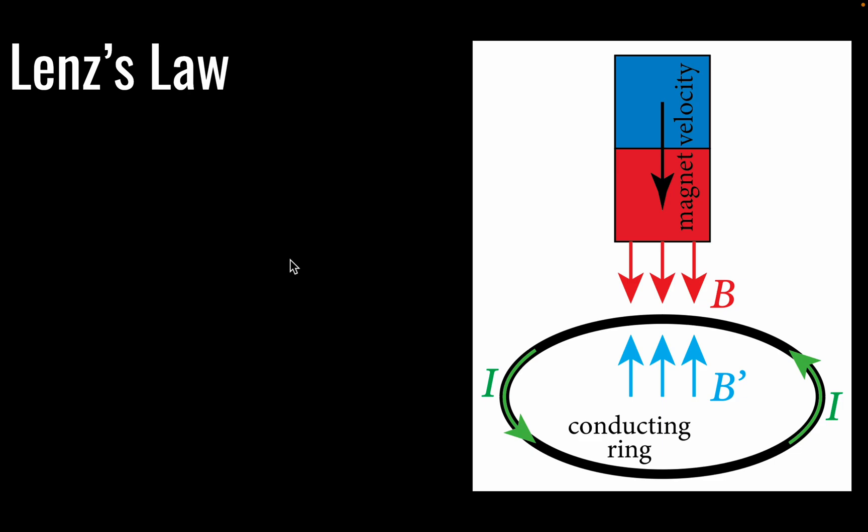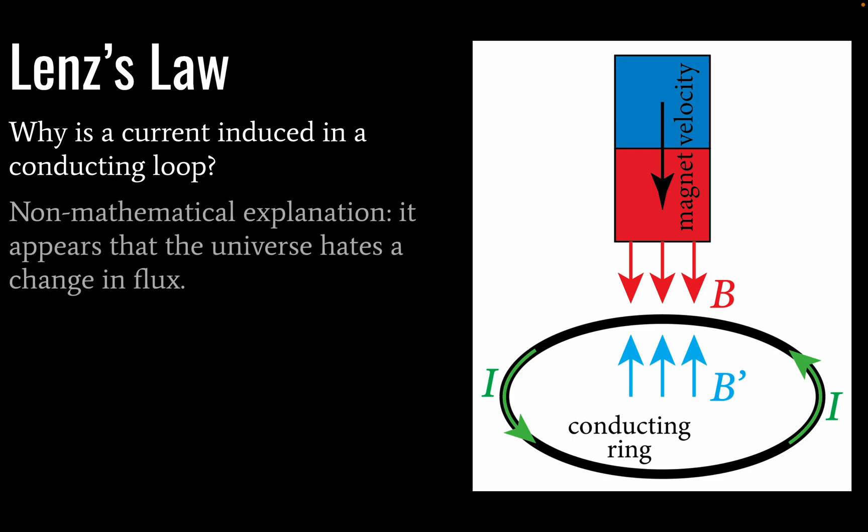So coming to the end now, last thing we're going to cover is Lenz's law. Definitely related to Faraday's law, which we just saw. So why do we get a current induced in a conducting loop? To explain this without advanced mathematics or university level physics, we'll just anthropomorphize the universe and say that the universe hates a change in flux. It does not like it.